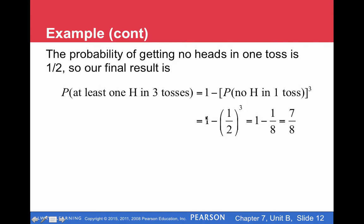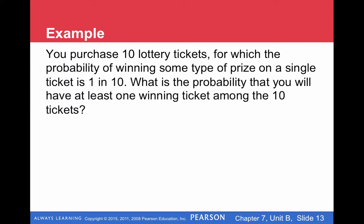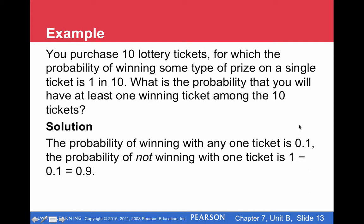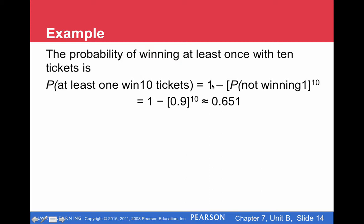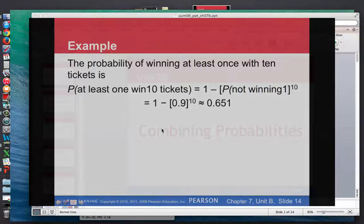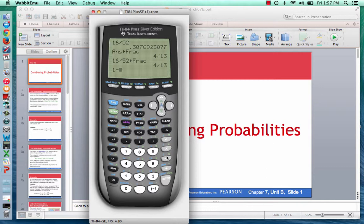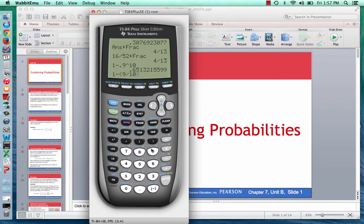Here's another example. You purchased ten lottery tickets for which the probability of winning some type of prize on a single ticket is one in ten. What is the probability that you will have at least one winning ticket amongst the ten tickets? We're sampling ten tickets, so n equals ten. The probability of winning is 0.1, so the probability of not winning is 0.9. We want at least one win in ten tickets, so that's one minus 0.9 to the tenth power, which equals 0.651. On the calculator: one minus 0.9 to the tenth gives 0.651. Or with a fraction: one minus nine-tenths to the tenth power.